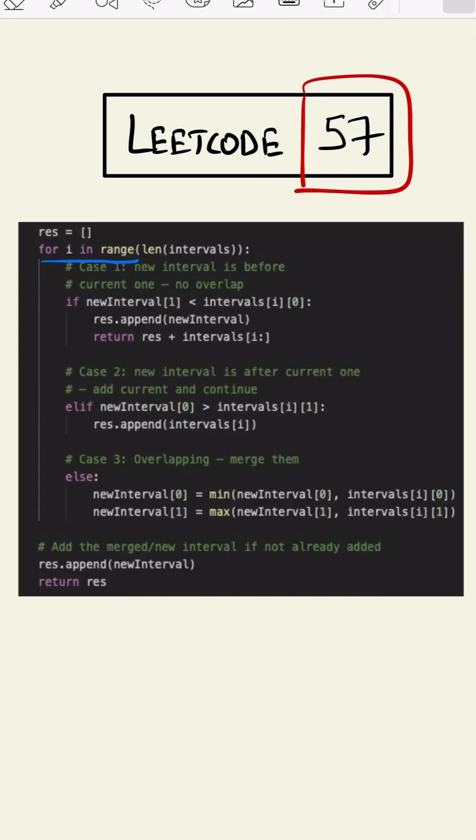This is our code. As we can see we are starting our for loop, and if the new interval is before the current interval we are adding here. If the interval is after our current interval we are adding it here, and if it is overlapping then we are finding the minimum and maximum and appending.